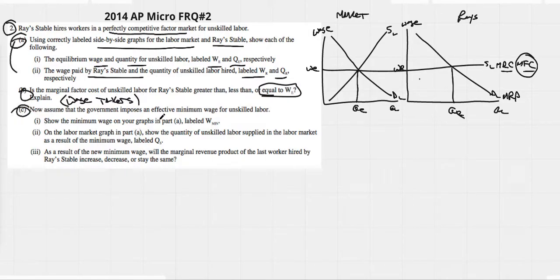All right, C. Now assume the government imposes an effective minimum wage for unskilled labor. Understand that an effective minimum wage has to be above the equilibrium. So this would be our new minimum wage, and we're going to label it W-minimum, something like that.